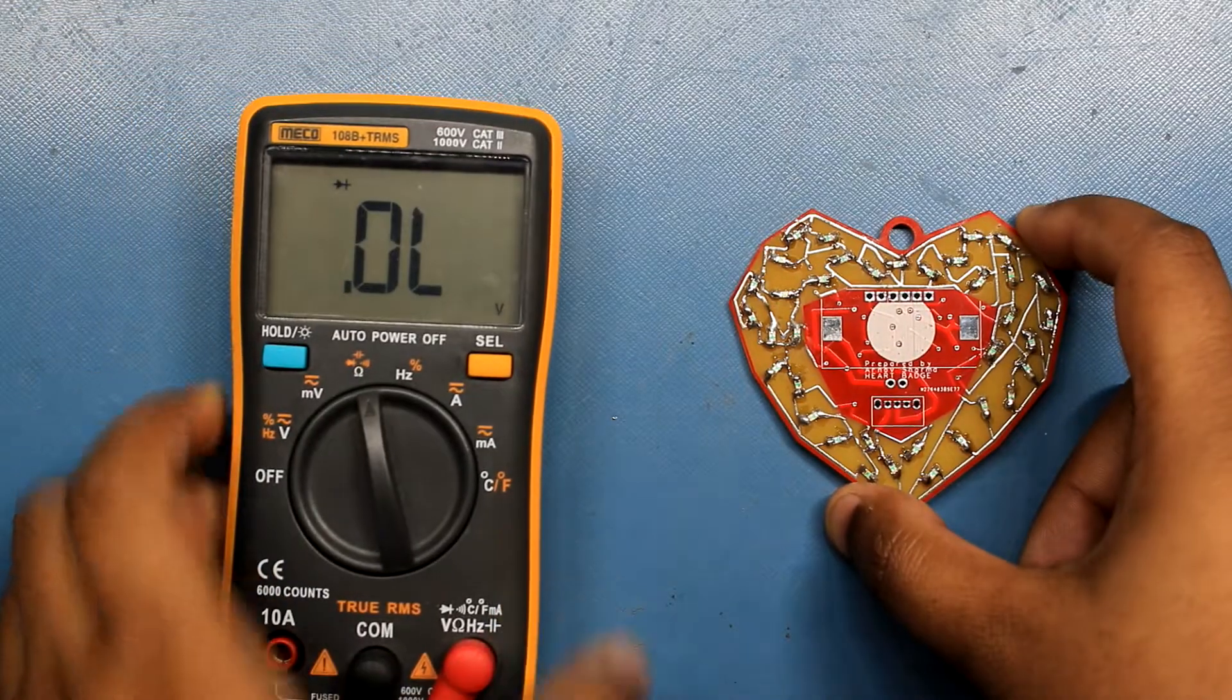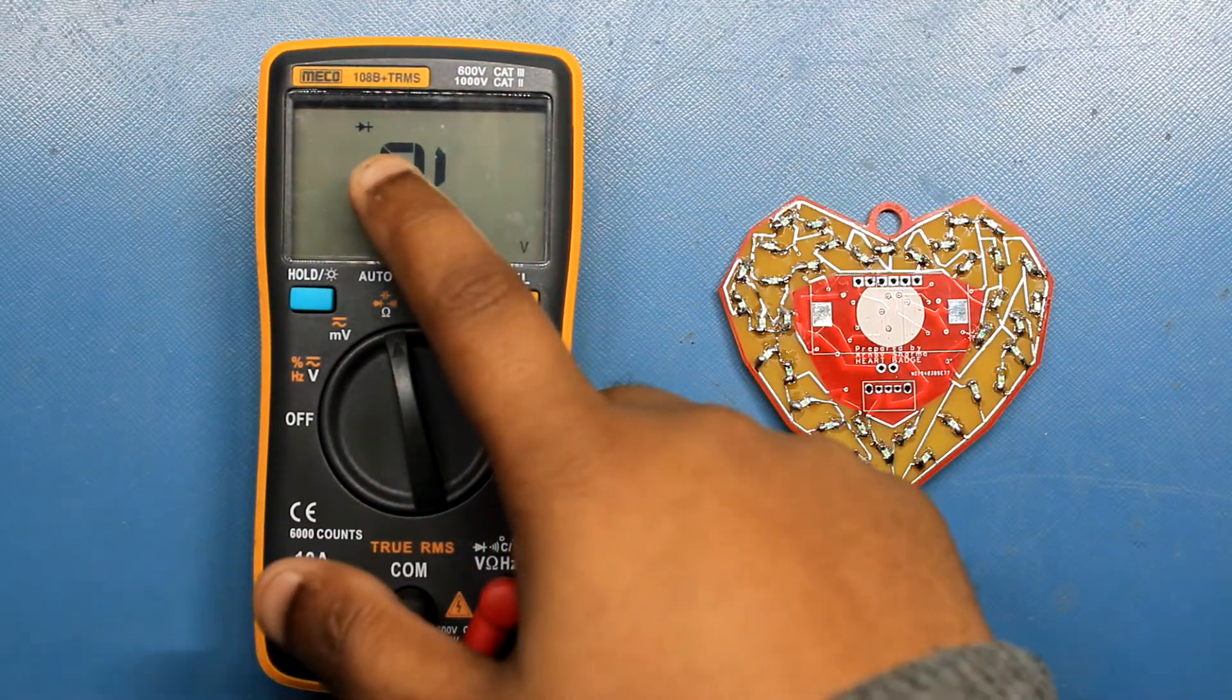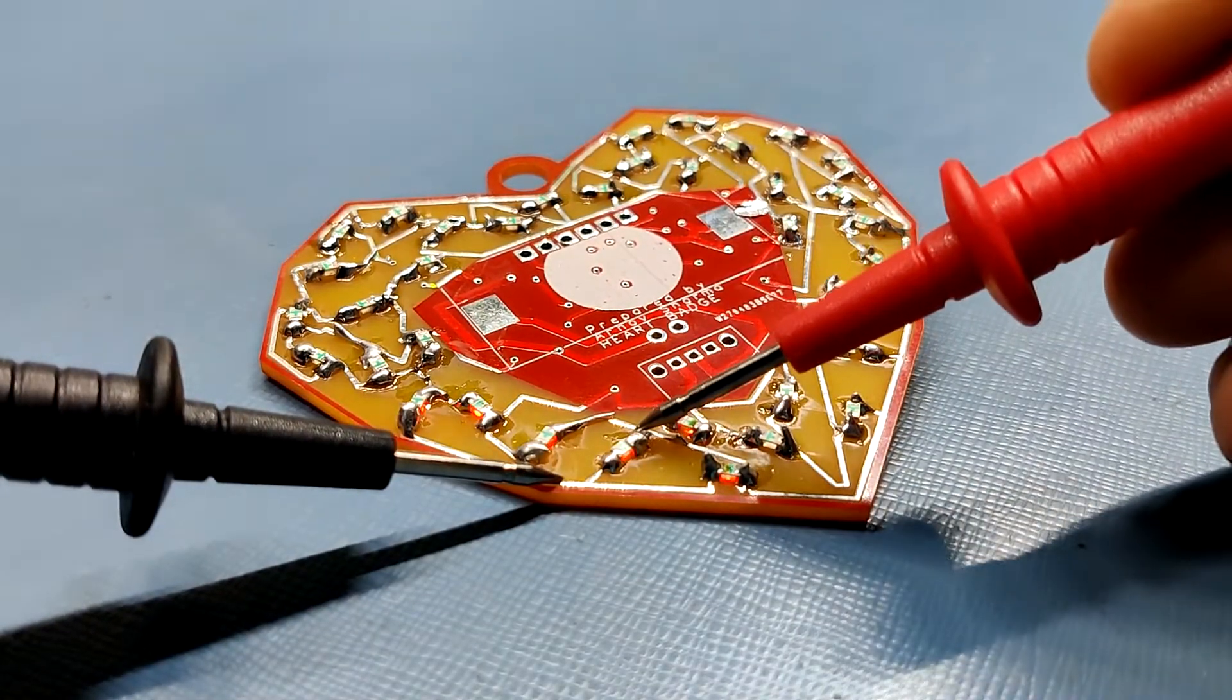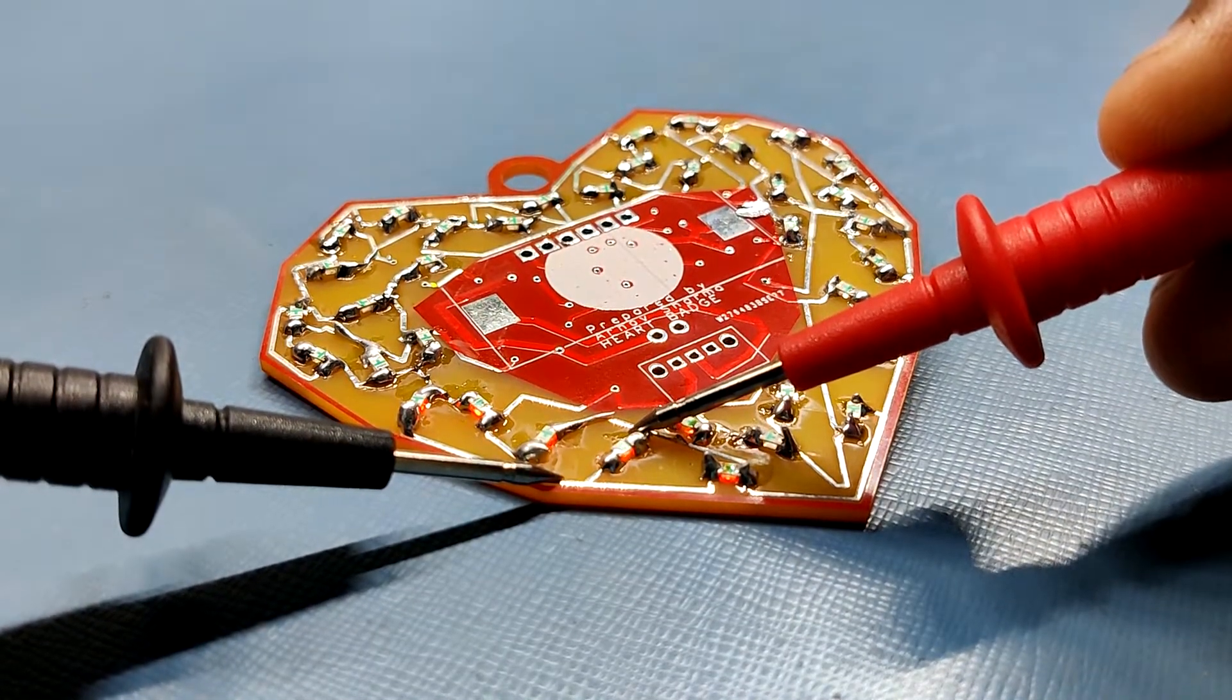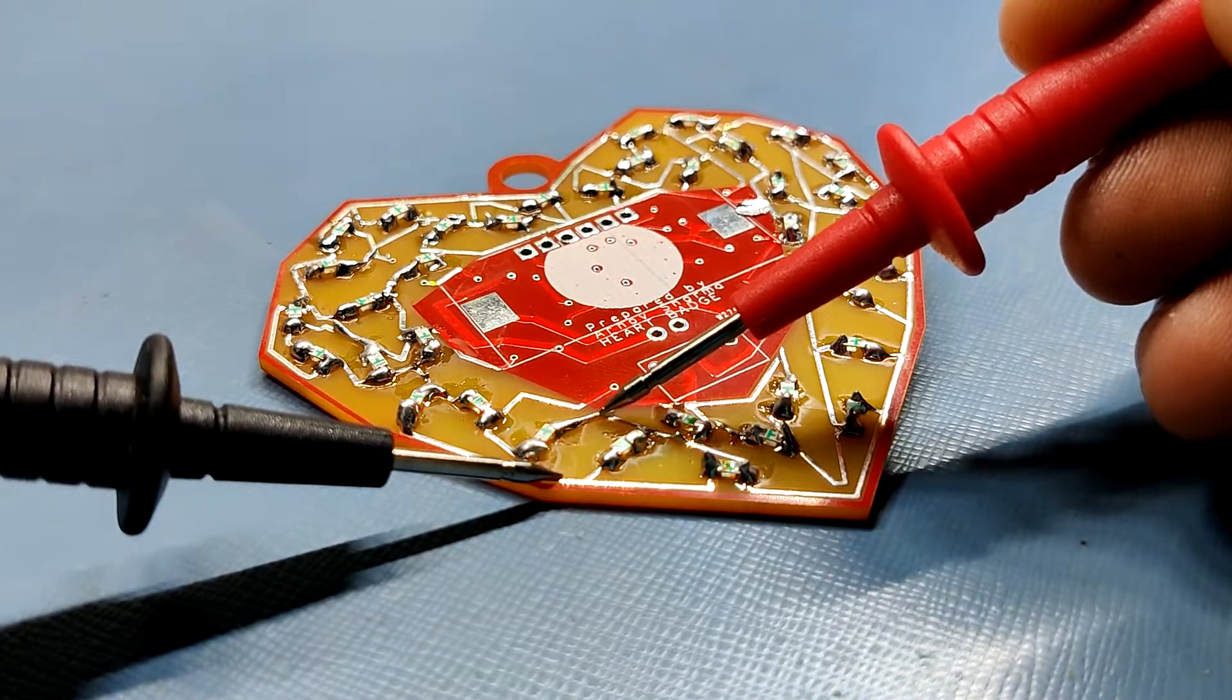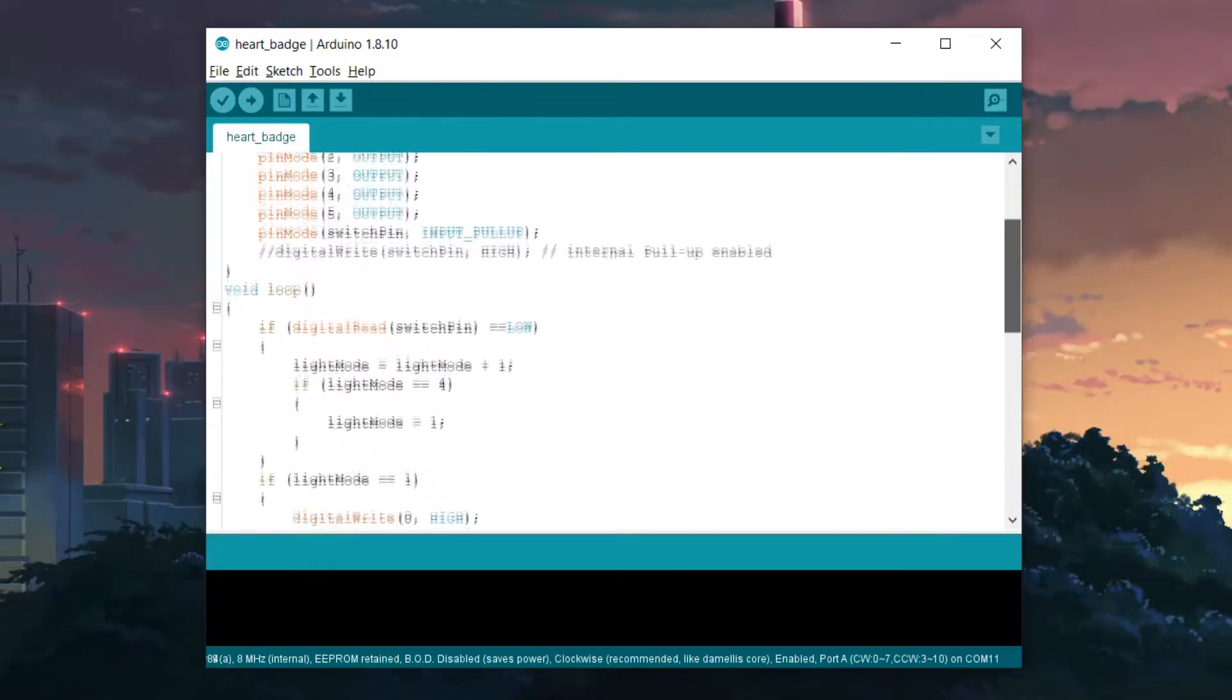I then used a multimeter to test each LED for proper soldering. We just have to set the multimeter in the diode checking mode and place the LED probes on the positive and negative side of LED. LEDs are working, which means we can now move on to the next step, which is to program the ATtiny84.